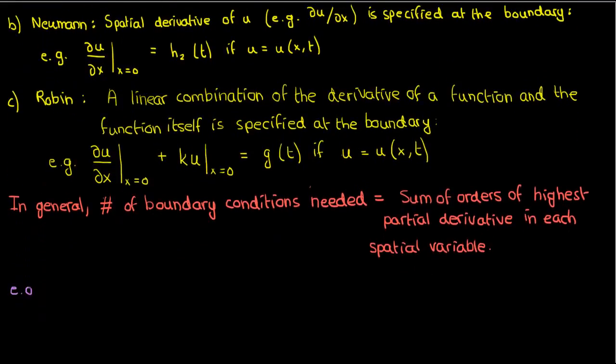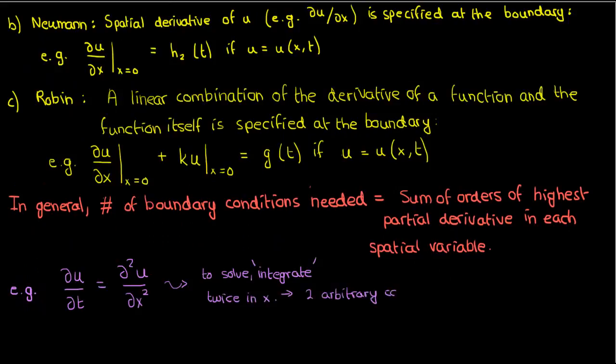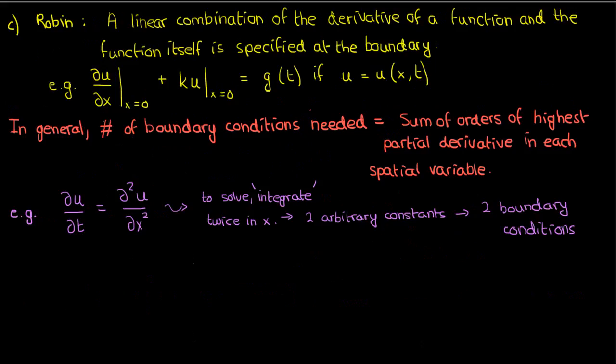The number of boundary conditions we need for a particular PDE is usually the sum of the orders of the highest derivatives in each spatial variable. As an example, if my PDE is the same parabolic PDE mentioned earlier, then in this case, to solve it, I would have to integrate twice in x, basically. In doing so, I would introduce two arbitrary integration constants, which means that I would need two boundary conditions to specify those constants. Now, I'm not explicitly integrating when I'm solving it, but when trying to visualize how many boundary conditions you'll need, it's good to think of it in terms of integration.